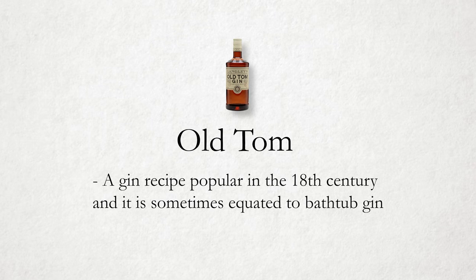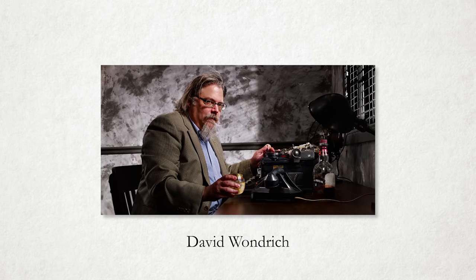Old Tom is a gin recipe popular in the 18th century, sometimes equated to bathtub gin. It was an underground recipe at the time — people would have to order it through holes in the walls of pubs, kind of like American moonshine. It was illegal. It's a lot maltier in flavor, closer to its parent spirit Genever, and makes use of sweeteners as well as some barrel aging. Although it's still a rarer style, there are a few companies that make it, like Hayman's and, more famously, Ransom, which partnered with cocktail historian David Wondrich to create the most authentic recipe possible.